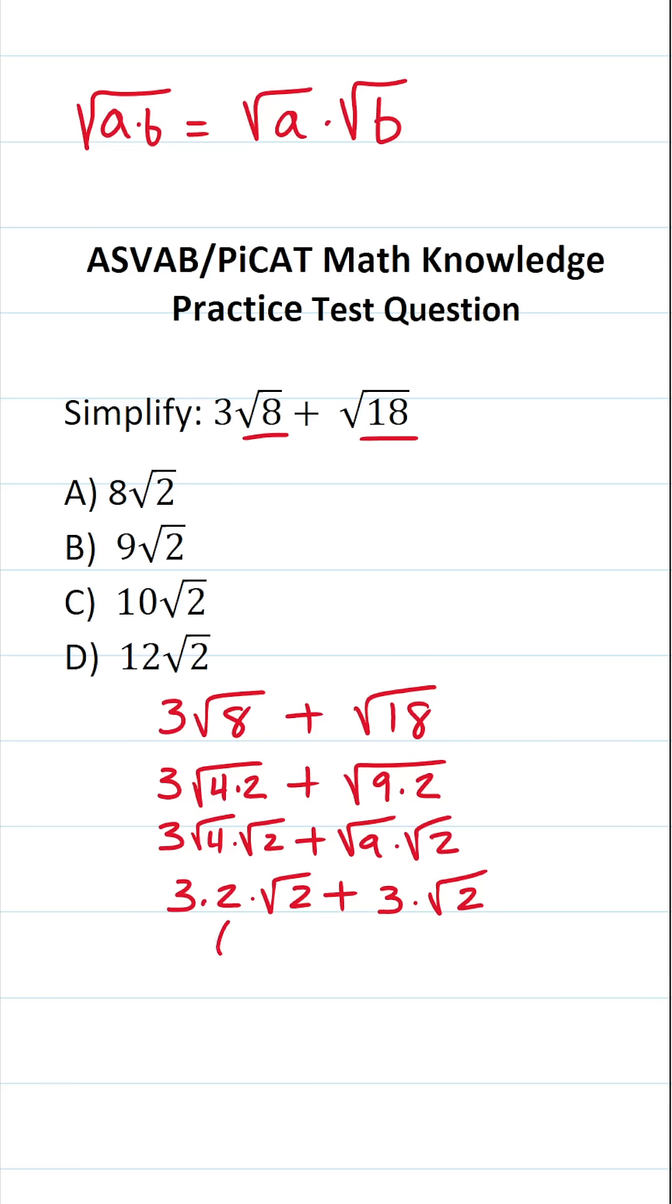3 times 2 is 6. And we typically don't express this multiplication symbol, so this is going to be rewritten as 6√2 plus, again, we don't express this multiplication symbol, 3 times the square root of 2 is just 3√2.